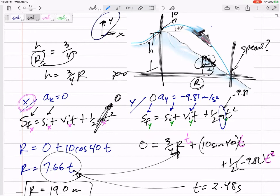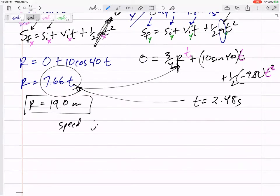Let's calculate the speed just before it hits the ground. After it hits the ground, it's no longer projectile. Well, these equations are not true. We'd have to think about that collision. But just before it hits the ground, we can still think about that as a projectile.